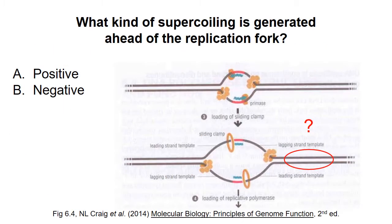Here's a question for you. For the purposes of this question, you should assume that the ends of the DNA are not able to freely rotate. As helicase unwinds double-strand DNA during replication, what kind of supercoiling is generated in the region ahead of the replication fork? You might want to pause the video and think about it.